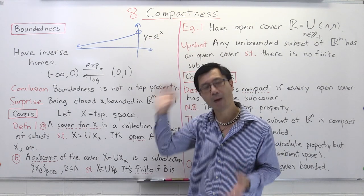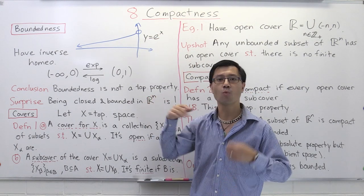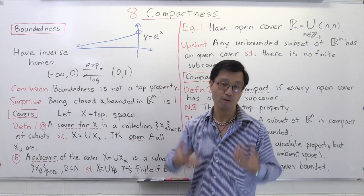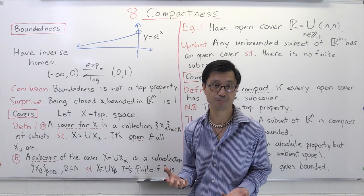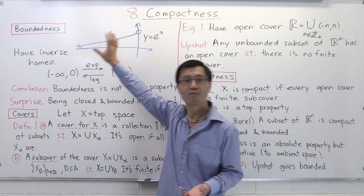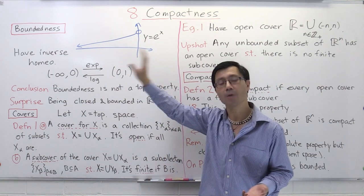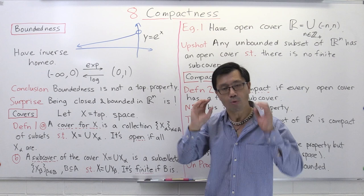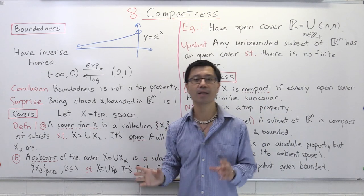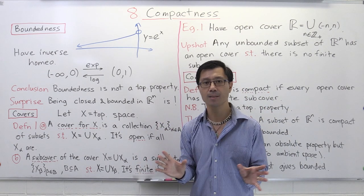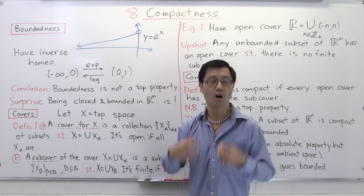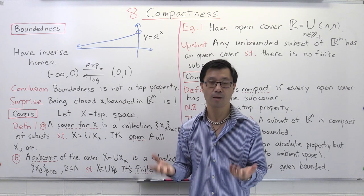One way to think of compactness is it's a way of generalizing the notion of finiteness. So let's motivate what's going on. Remember, in a topological space, unlike in a metric space, we can talk about geometry, but we don't have a notion of distances.